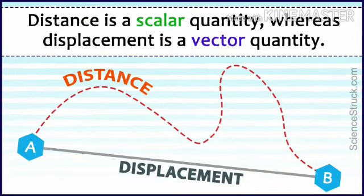So distance is a scalar quantity whereas displacement is a vector quantity. In distance we can travel the total path length whereas displacement is the shortest distance.